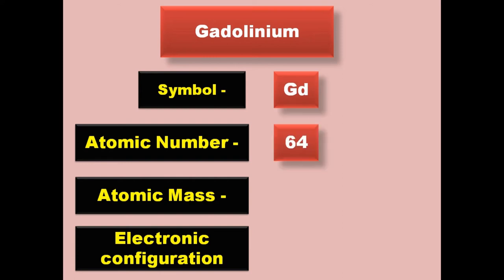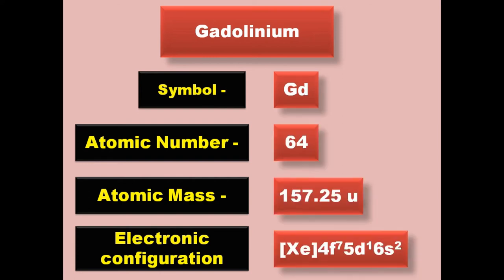Gadolinium has symbol Gd, atomic number 64, atomic mass 157.25, electronic configuration [Xe] 4f7 5d1 6s2. Gadolinium is a lanthanide and exists in solid form at room temperature.